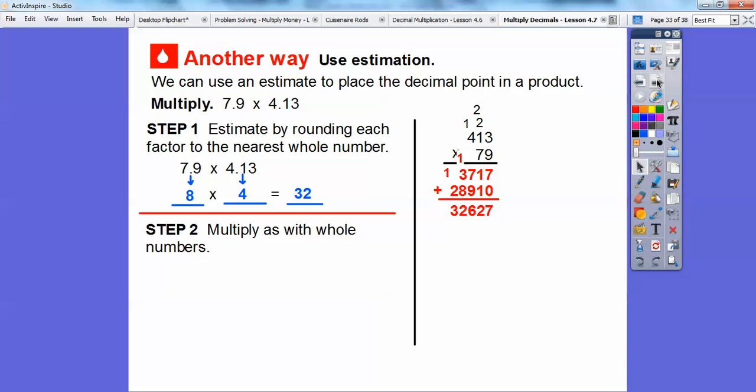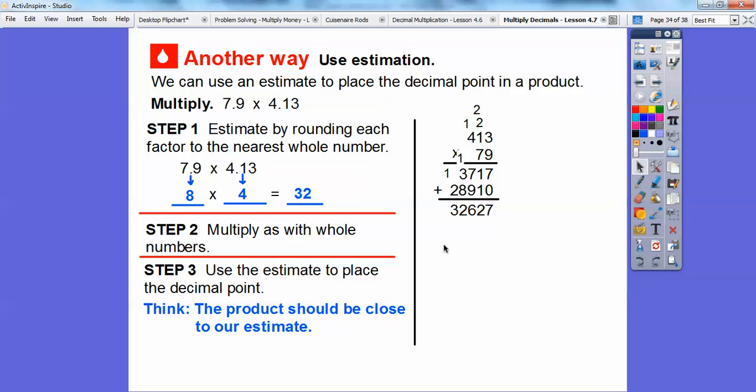So the next step is to use our estimate. Remember, our estimate is 32 to place the decimal point. Well, where's the decimal point going to go here to make it close to 32? Not there, not there. Right there. So that would be 32.627. That would make it close enough. So 7.9 times 4.13 would come to 32.627. A couple of methods you saw there. Both are great.